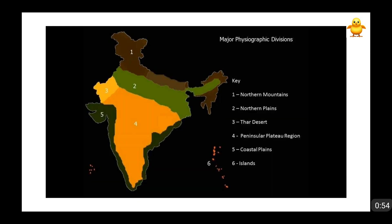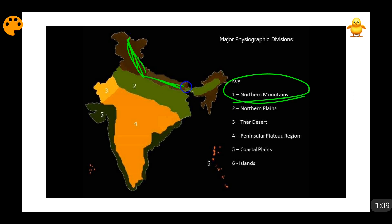Now this figure will give you the geological configuration and geological occurrence of these divisions. The northern mountains are denoted by the brown region here. The region of Nepal is not our consideration. So the brown areas represent the northern mountains.